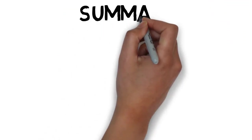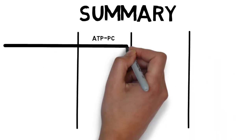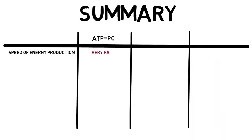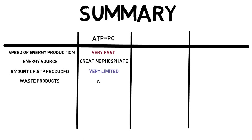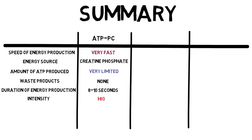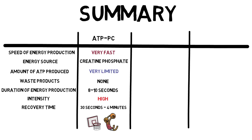The ATP-PC system is very fast at energy production. Its energy source is creatine phosphate. The amount of ATP produced is very limited, but there are no waste products. It can last for up to 8 to 10 seconds, and the intensity produced will be high. This system can recover from about 30 seconds to 4 minutes. Due to being able to quickly produce high intensity work, the ATP-PC system predominantly deals with high intensity activities over short durations, such as sprinting or jumping.